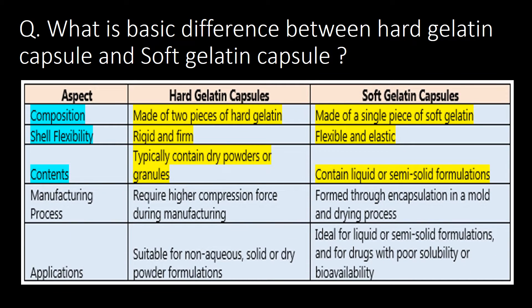What is the basic difference between hard gelatin capsules and soft gelatin capsules? With the following five aspects you can differentiate between them. Hard gelatin capsules are made of two pieces of hard gelatin whereas soft gelatin capsules are made of a single piece of soft gelatin. Hard gelatin capsules are rigid and firm whereas soft gelatin capsules are flexible and elastic. Hard gelatin capsules typically contain dry powders or granules whereas soft gelatin capsules contain liquid or semi-solid formulations.